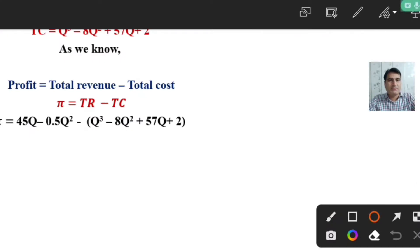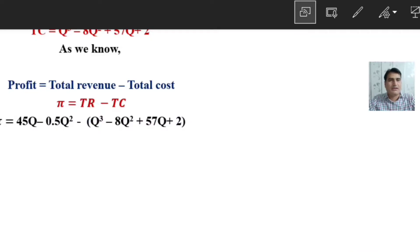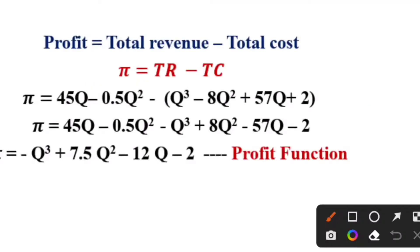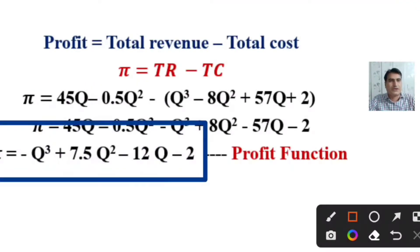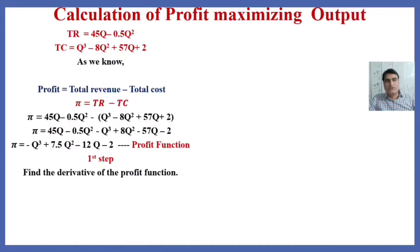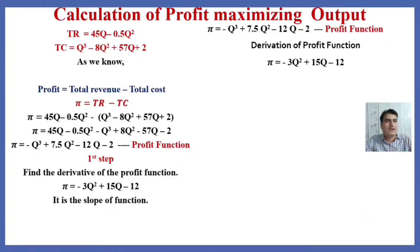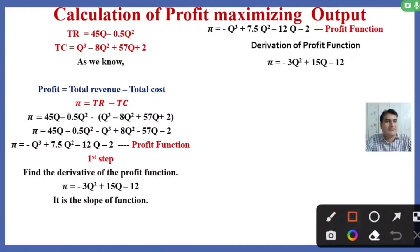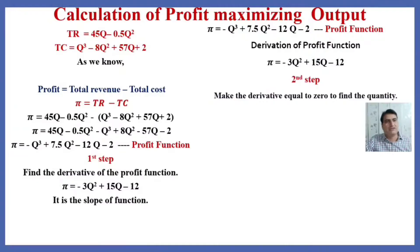We derive the profit function by substituting the total revenue and total cost functions. This is the profit function we derived using the total revenue and total cost function. Using the derivative rules, we find the derivative of the profit function — this is the first derivative of the profit function.